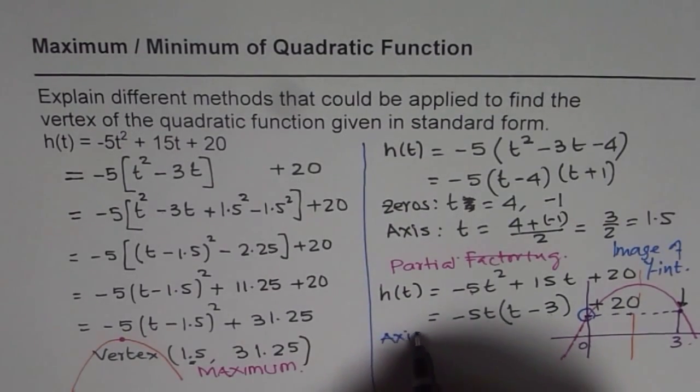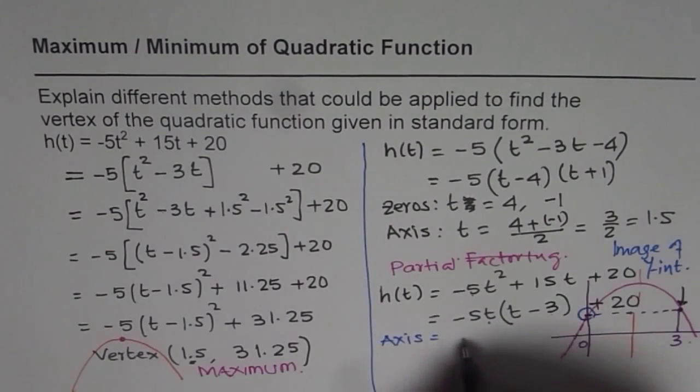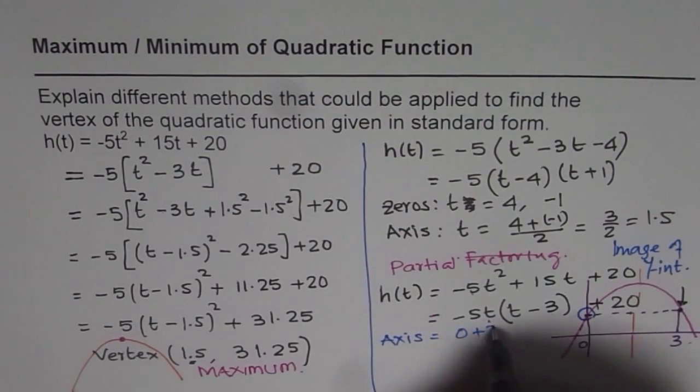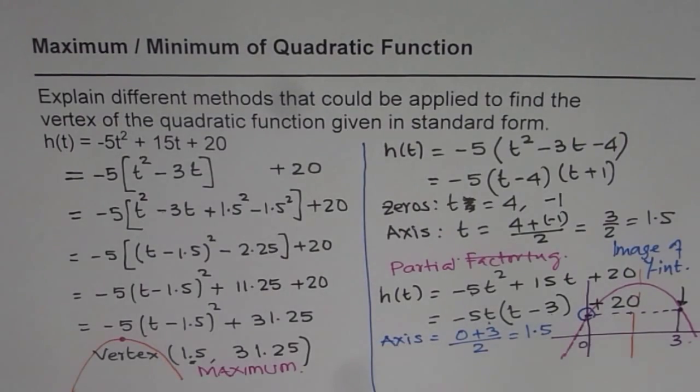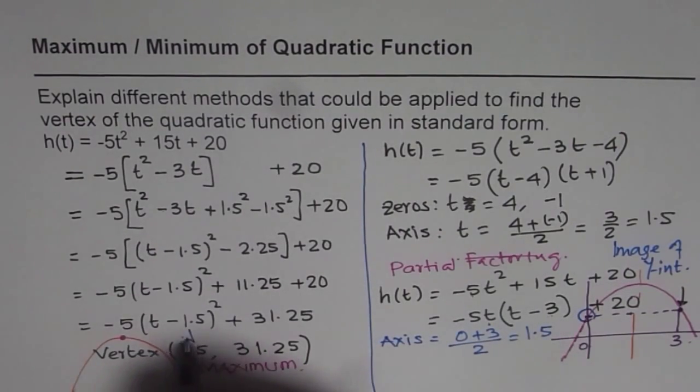So we will write axis in this case should be equal to (0 + 3)/2, which also gives you 1.5 as the value of t, the same value of t as you can see.